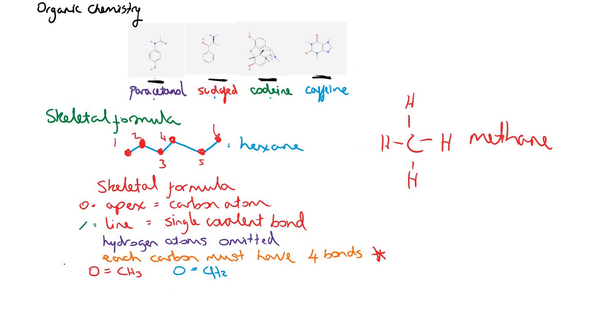well, what is bonded to each carbon? If I see carbon number one there that I've labelled, carbon number one has just got a blue line directly bonded to another carbon, which is carbon number two. The blue line is a single covalent bond.